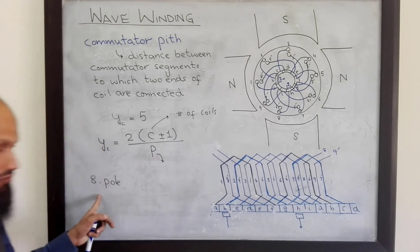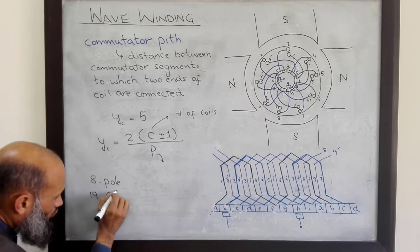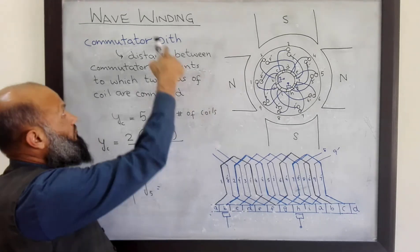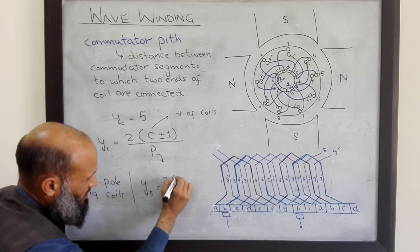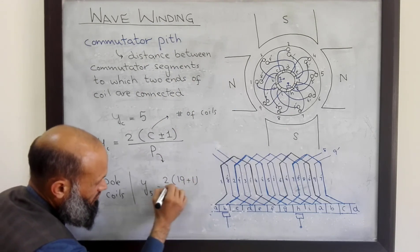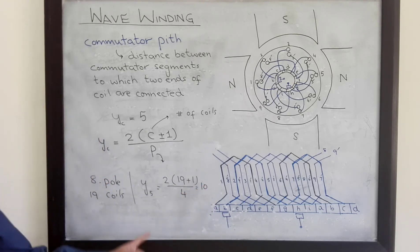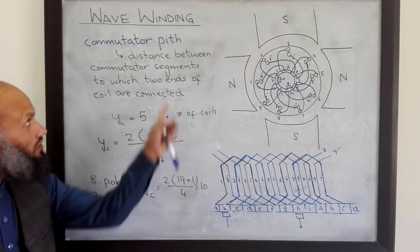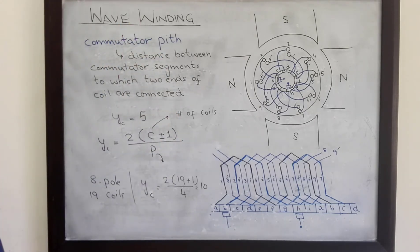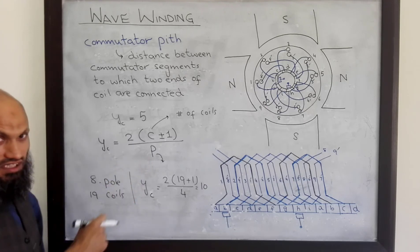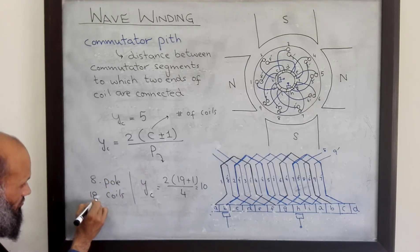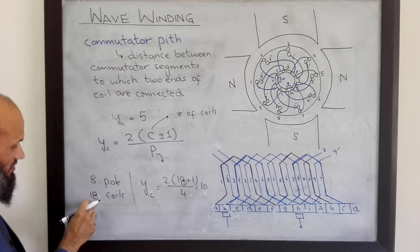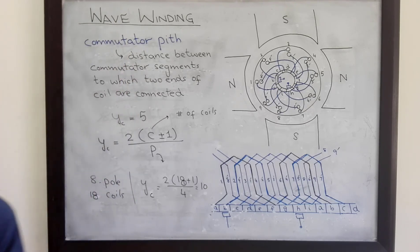For example, if we have an 8-pole machine with 19 coils, then the commutator pitch to obtain wave winding will be equal to (2×19 + 1) / 4 = 39/4... so commutator pitch will be equal to approximately 10. We can see that wave winding is not always possible — we have to ensure a certain number of coils in the machine. For example, if we had 18 coils, that will not come out to be an integer. So to achieve wave winding, we have to ensure an appropriate number of coils.